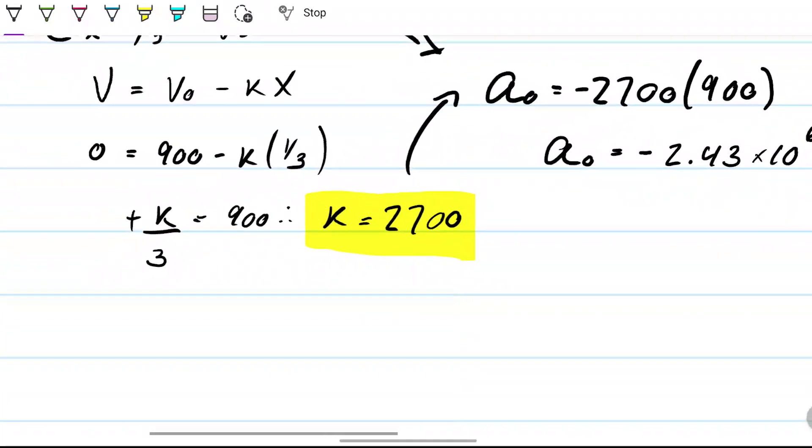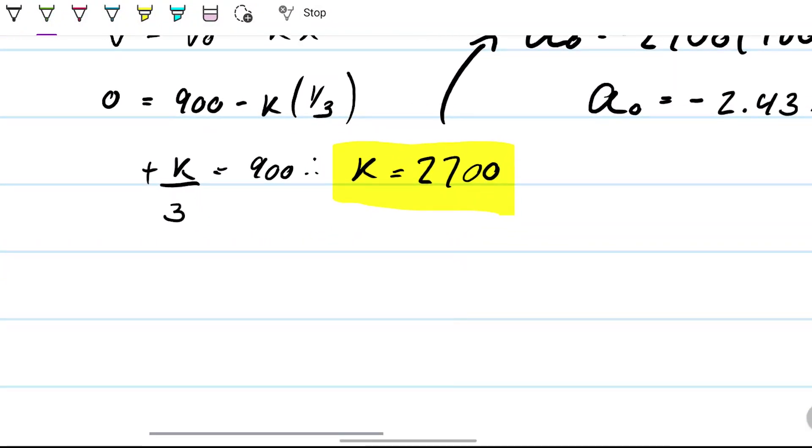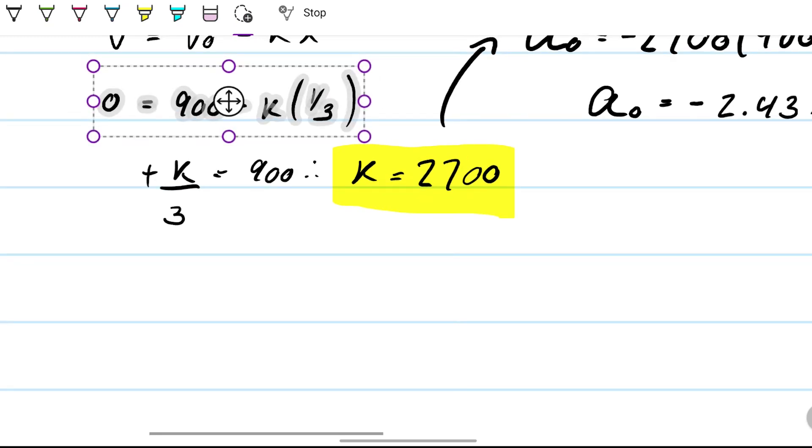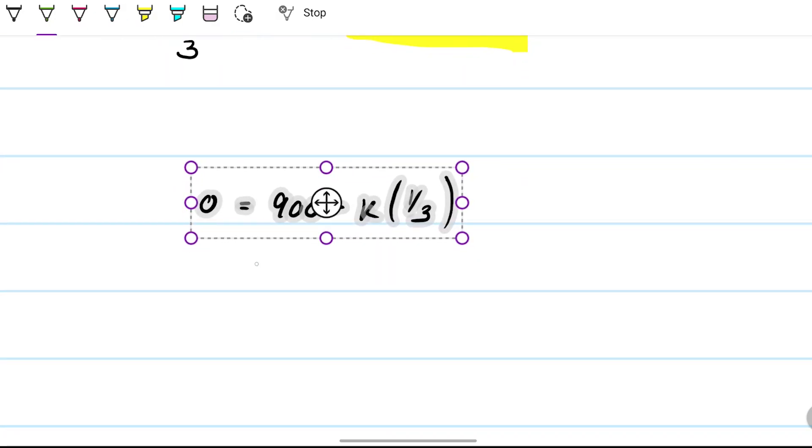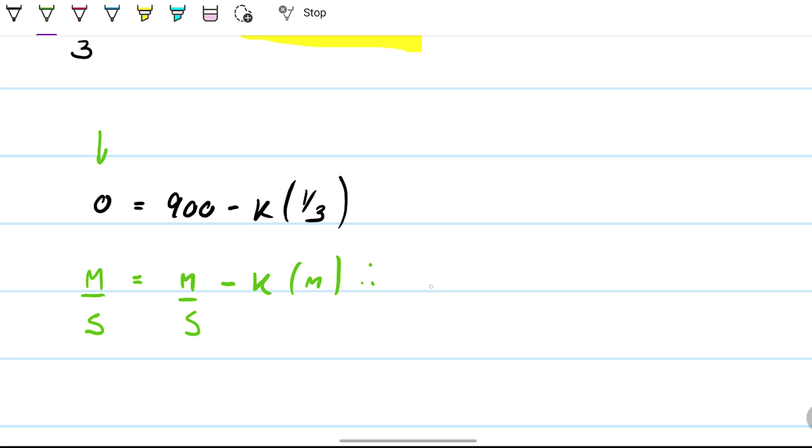We can look at the units. On this side we have zero meters per second because it's the velocity, and then here we have 900 meters per second, and here we have k times meters. This means that if I'm looking from a unit standpoint, k equals meters per second divided by meters, and therefore k equals one over seconds.